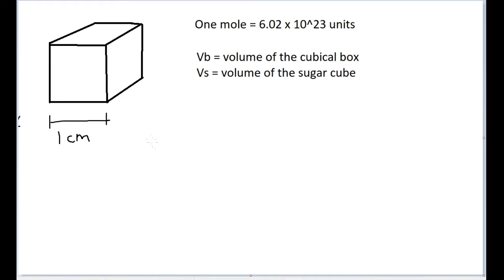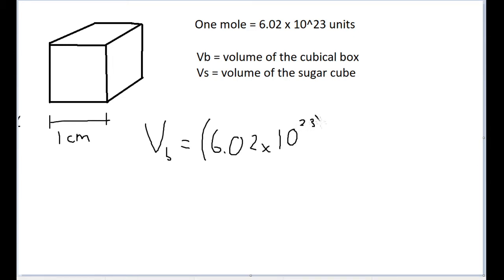Let's try finding the volume of the box with a formula. We know the volume of the box is going to be something that fits Avogadro's number of sugar cubes into it. So VB is equal to 6.02 times 10 to the 23rd times VS. Now let's substitute in what VS is. We are not given the volume of the sugar cube — we are given the edge length though.